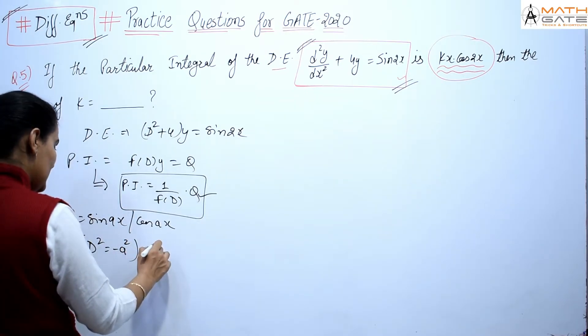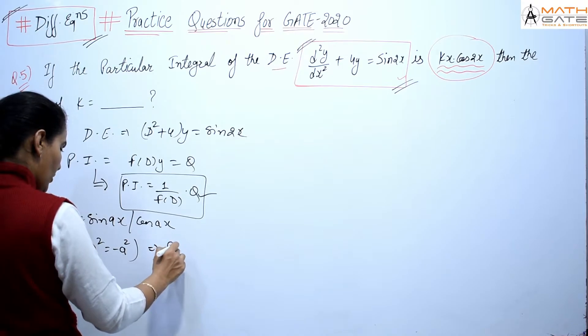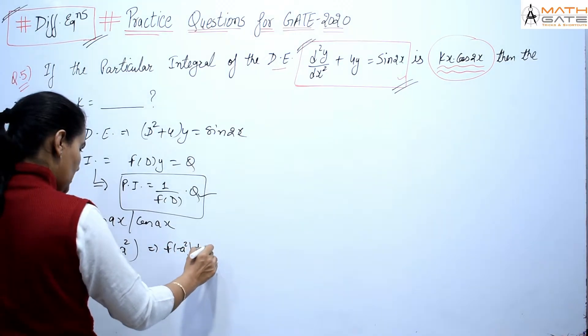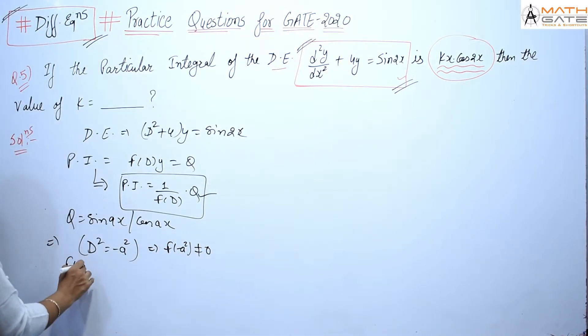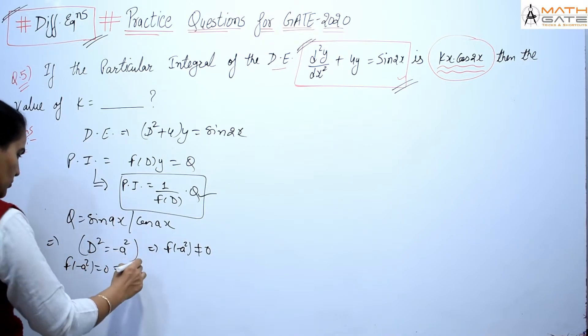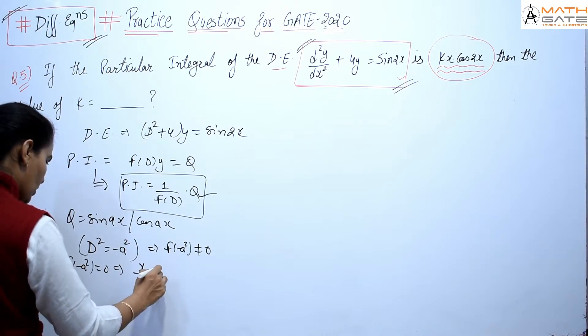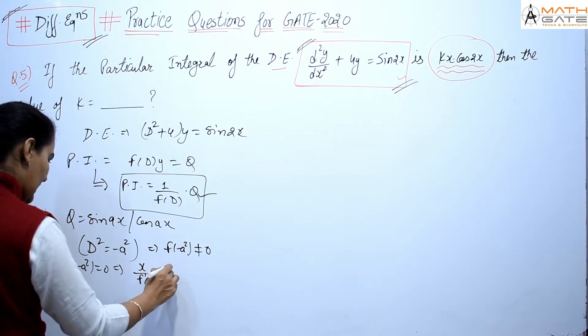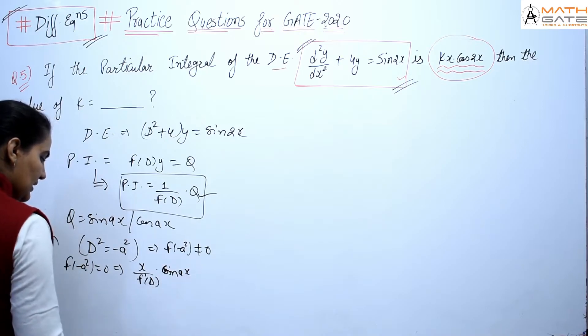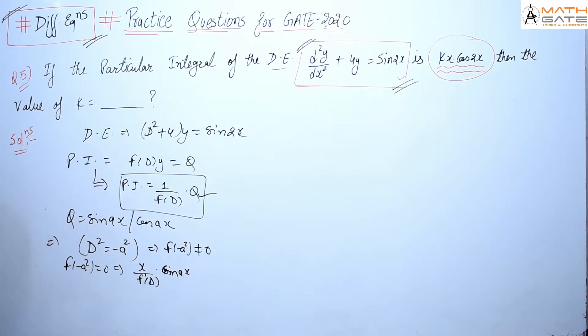This case is when f(-a²) is non-zero. In case f(-a²) is zero, students, then we write x/(f(D)) times cos(ax) or sin(ax), and then we replace it again.